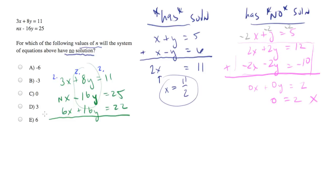So the new equation we're going to be dealing with is 6x plus 16y equals 22. Now let's add these two equations, and what we'll end up with is nx plus 6x equals 47.